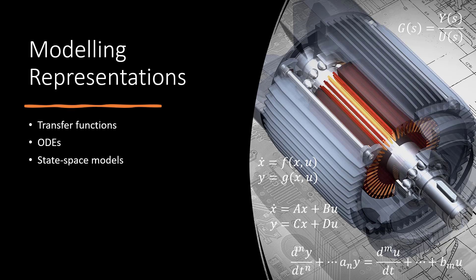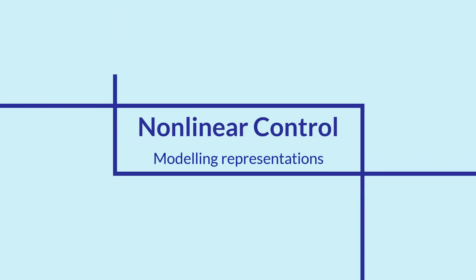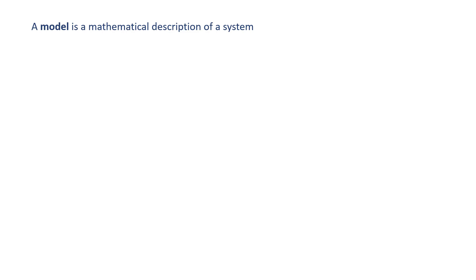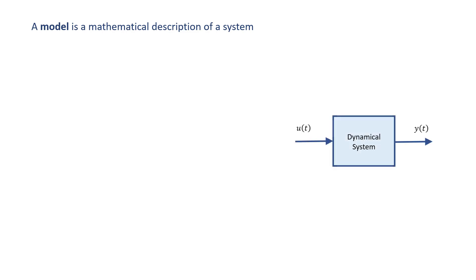In this lecture, we explain different modeling representations of a dynamical system. A model is a mathematical representation of a system which allows us to understand and predict the behavior of the system. For example, we can predict the output of a system for different inputs and initial conditions. There are several techniques to theoretically or experimentally determine the model of a system, which we are not going to cover in this video. We however assume the model of a dynamical system is known and want to learn about possible ways of representing the model and the advantages and disadvantages of each of these representations.